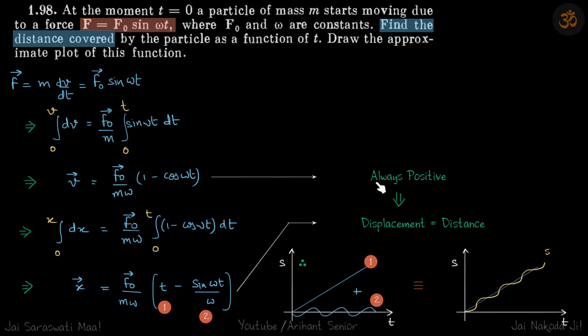Velocity is always positive, which means displacement equals distance. So what we have found here—displacement—is the same as distance, and we are going to plot the same curve.